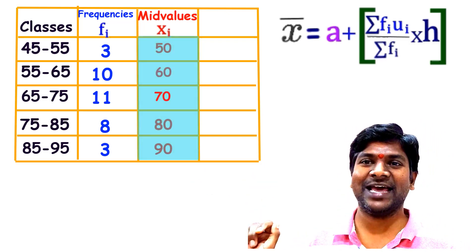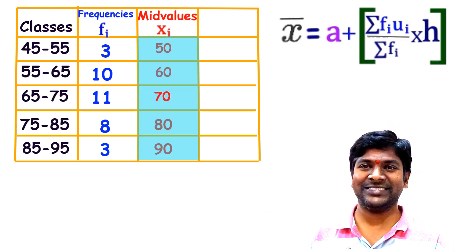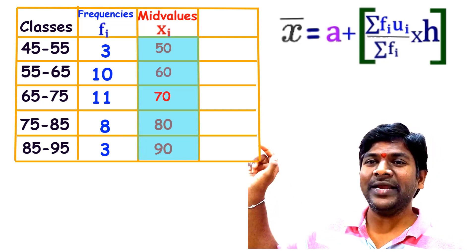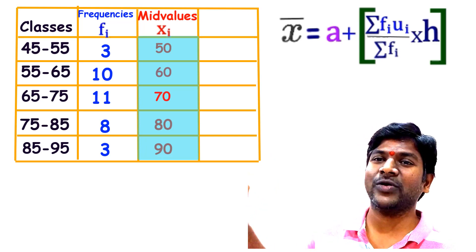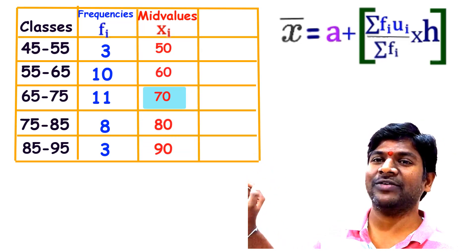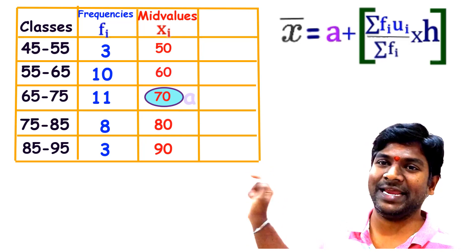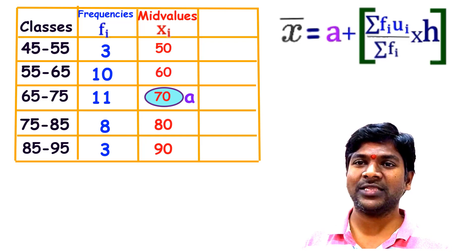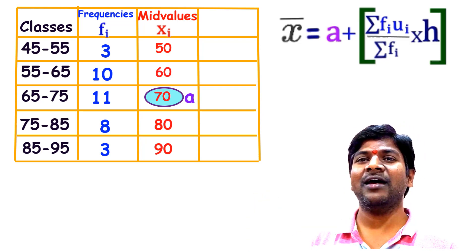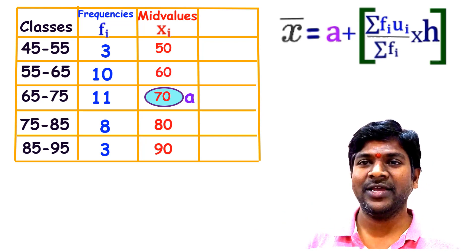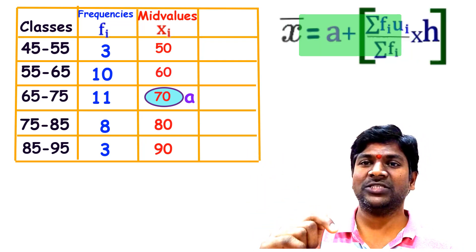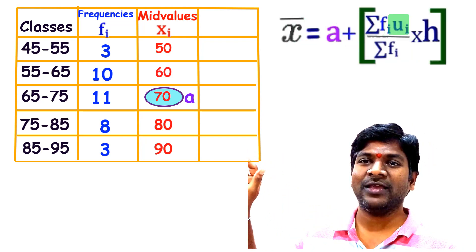The assumed mean is taken as the middle observation among all mid values. Here the middle mid value is 70, so a = 70. It is not compulsory to take the middle mid value — whichever mid value is chosen as assumed mean, the answer will be the same.